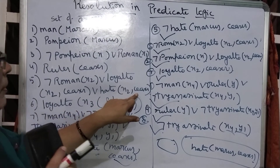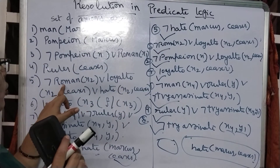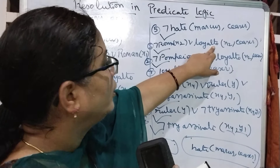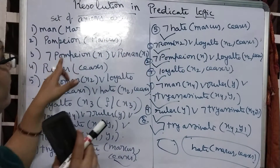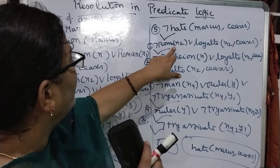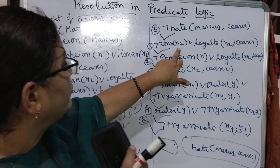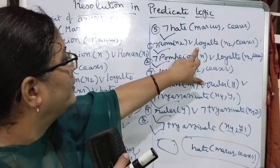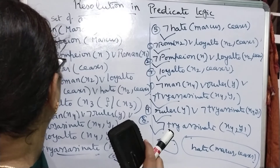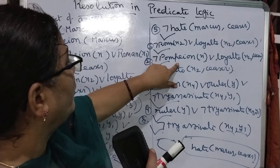At axiom 5 you have hate(x2, Caesar). So I added 5 — hate and hate get cancelled. The resultants are negation Roman(x2) or loyal_to(x2, Caesar). These two things can get cancelled in any of the given axioms. Roman is there in the third one. I have taken axiom 3 — x1 will get substituted with x2, Roman and negation Roman get cancelled. The resultant is negation Pompeon(x1) or loyal_to. I can cancel with the second axiom — Pompeon(Marcus) — giving loyal_to(x2, Caesar).